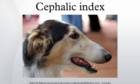A dolichocephalic skull is a relatively long skull. List of dolichocephalic canines: Afghan Hound, Airedale Terrier, American Staghound, Azawakh, Basset Hound, Bedlington Terrier, Bloodhound, Borzoi, Bull Terrier, Cesky Terrier, Chart Polski, Chippiparai, Sloughi, Coyote.